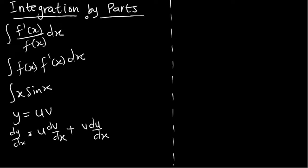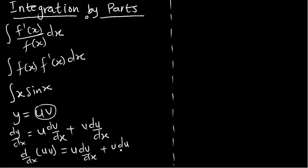This means d/dx(uv) equals u·dv/dx plus v·du/dx. Now we are going to integrate both sides. Applying the integration sign to each part of the equation with respect to x, we get an expression we can work with.